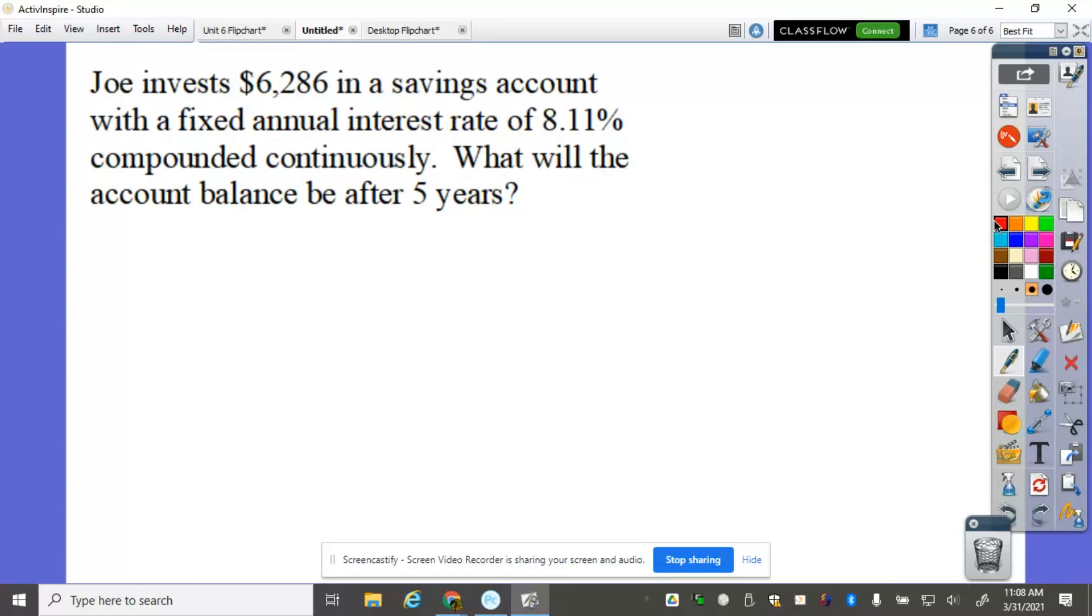Next, Joe invests $6,286 in a saving account with a fixed annual interest rate of 8.11%, compounded continuously. What will the account balance be after five years? So the principal here is $6,286.